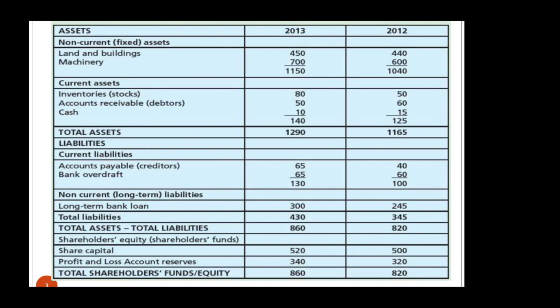Non-current liabilities are the long-term debts the business owes for more than a year. The most common example is a long-term loan, which is what is required at IGCSE level. This gives you total liabilities. The key balance is total assets minus total liabilities — as shown here, that figure is 860.